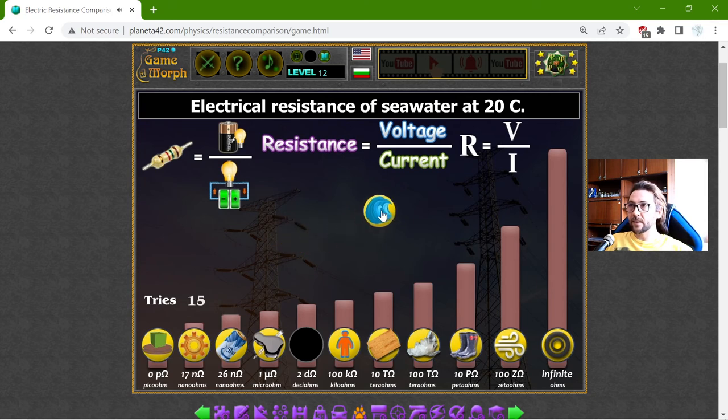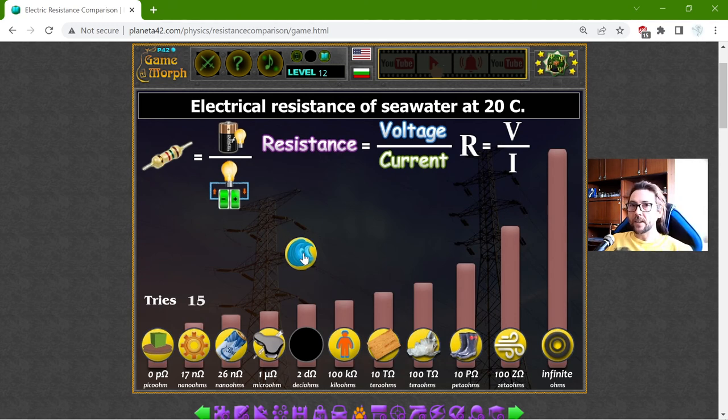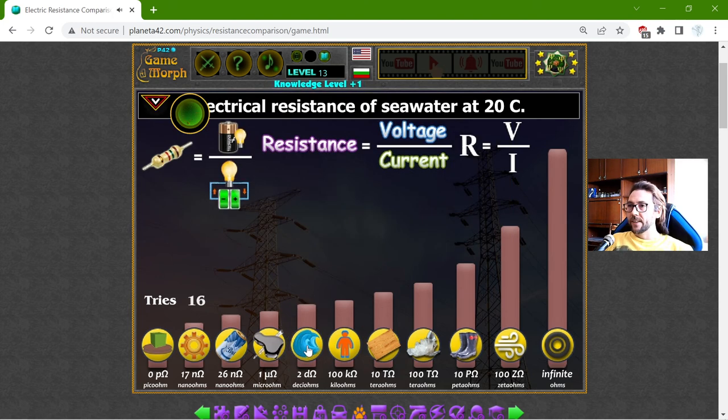And the electrical resistance of sea water at 20 degrees Celsius. Now, this is sea water. I know that the difference between sea and distillate water is very big difference in resistance. So, the sea water should be 22 deci ohms.